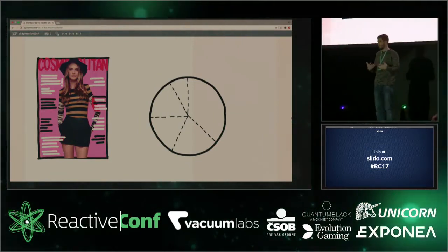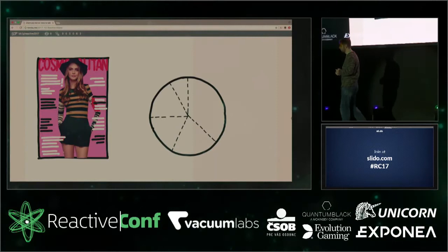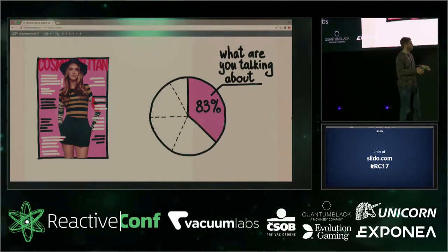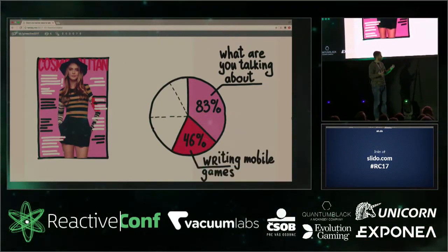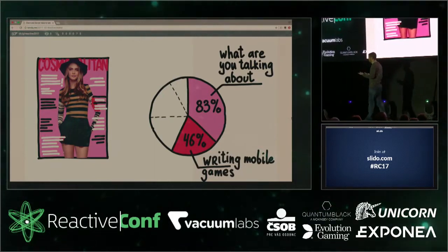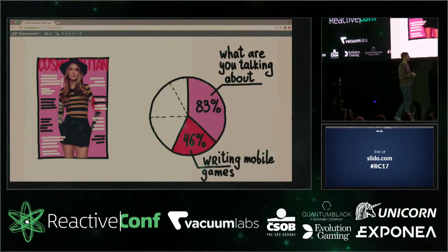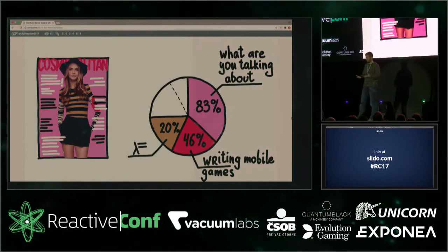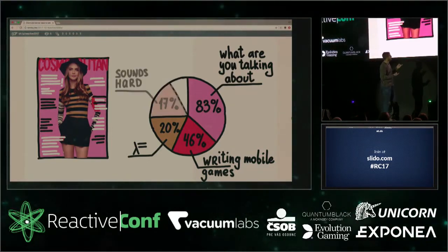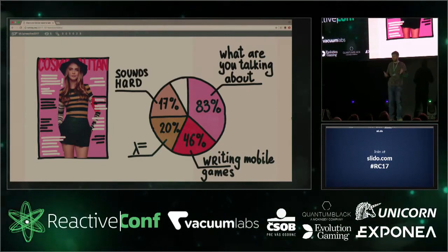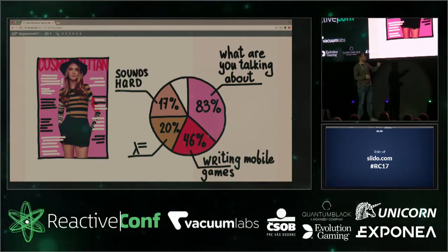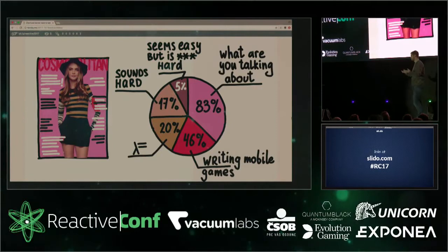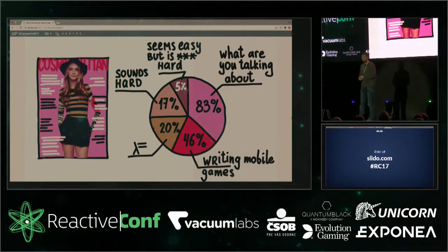The magazine Cosmopolitan ran a poll asking exactly that question: how hard do you think it is to write collaborative web applications? 83 percent just didn't understand the question. 46 percent are busy writing mobile games so they don't think it applies to them — even though it does. 20 percent think static typing will save them from any sort of trouble. 17 percent think it's actually quite hard. And finally, the last 5 percent think it seems easy but it's actually quite hard.